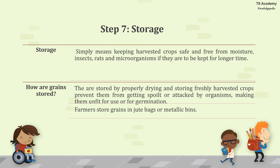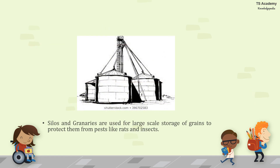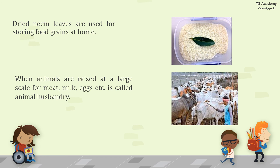The last step is storage, which means keeping harvested crops safe and free from moisture, insects, rats, and microorganisms if they are to be kept for a longer time. Grains are properly dried and stored to prevent spoilage or attack by organisms. Farmers generally store grains in jute bags or metallic bins. Silos and granaries are used for large-scale storage to protect grains from pests like rats and insects. Dry neem leaves are used for storing food grains at home. When animals are raised at large scale for meat, milk, eggs, etc., it is called animal husbandry. Thank you.